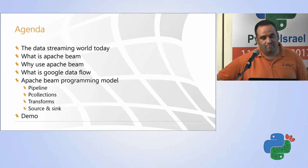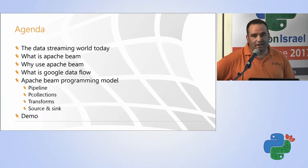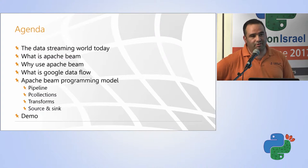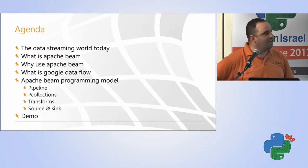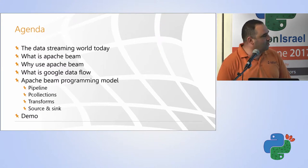So, we will start talking about the data streaming world today, data processing. And we will talk about what is Apache Beam. And then we will move forward to talk about the different components of Apache Beam and how it's got to do with Google Cloud Dataflow. And then we will move to Apache Beam programming model. We will talk about pipelines, p-collections, transformers, and source and sink.